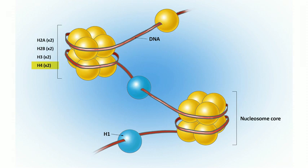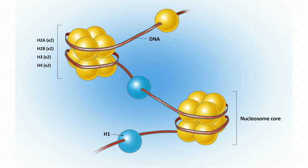Those histone proteins consist of a lot of lysine and arginine, which makes histones positively charged. That positive charge makes it easy for histones to associate with DNA, which is negatively charged because of the negatively charged phosphate groups. So the DNA wraps twice around a core of eight histones, like a thread wrapping around a spool.